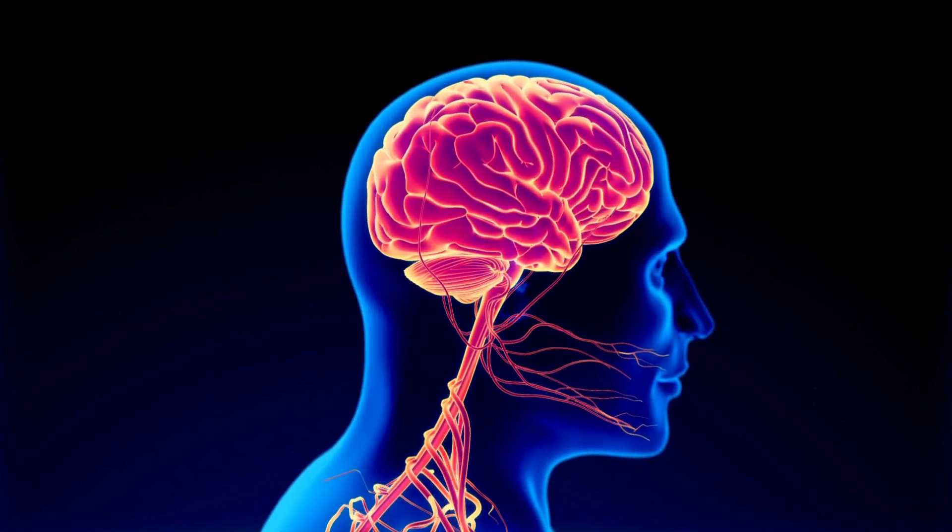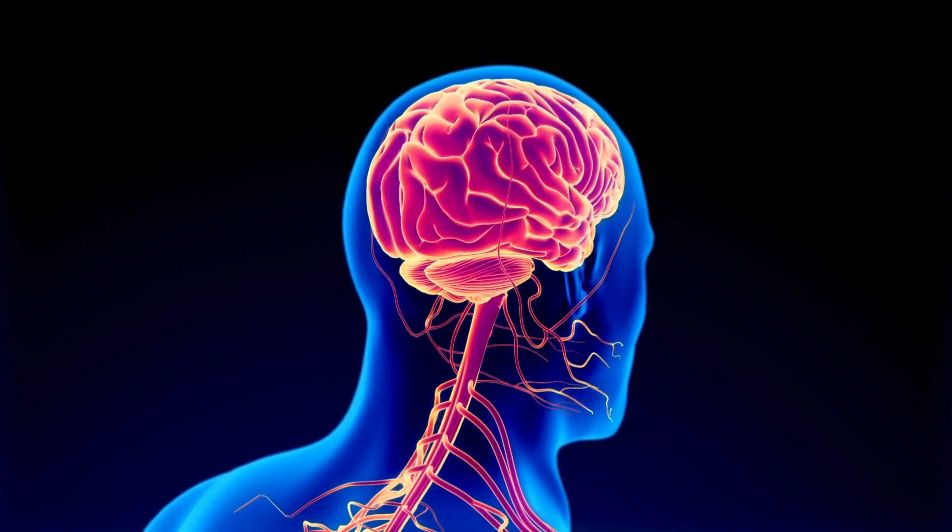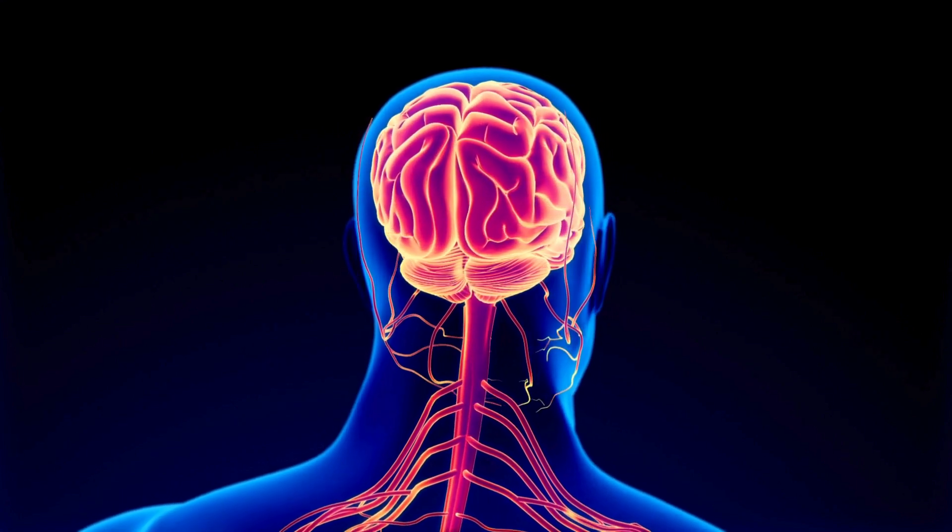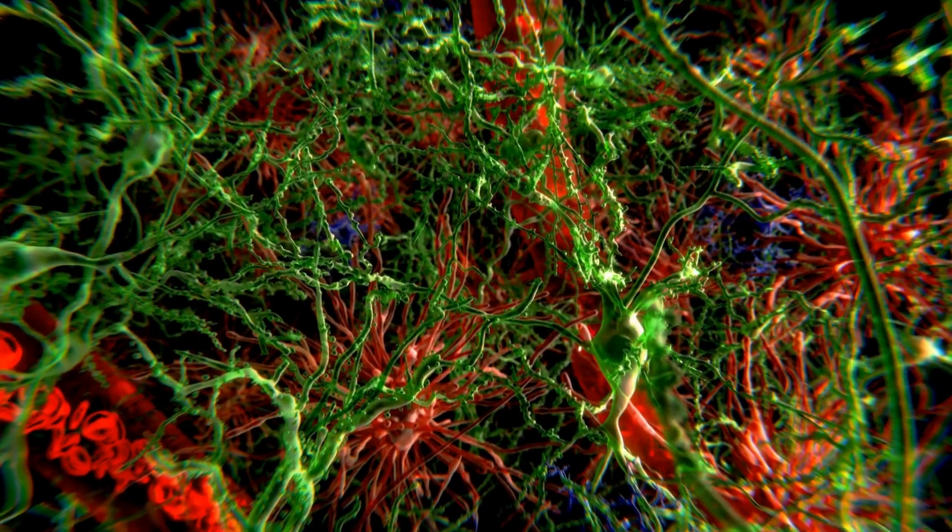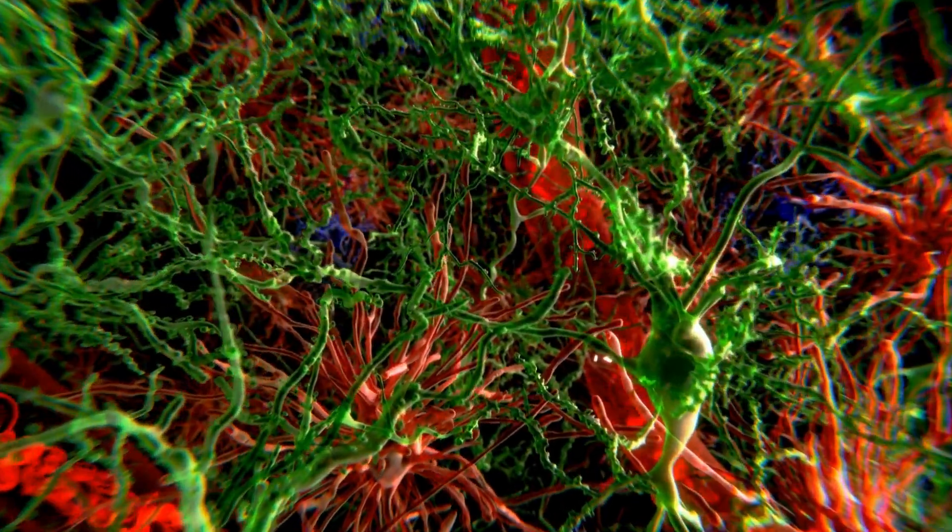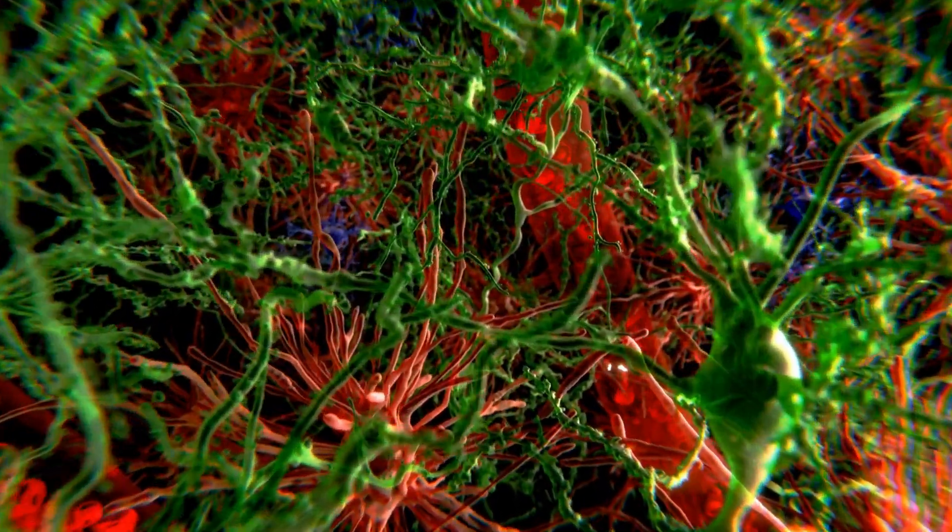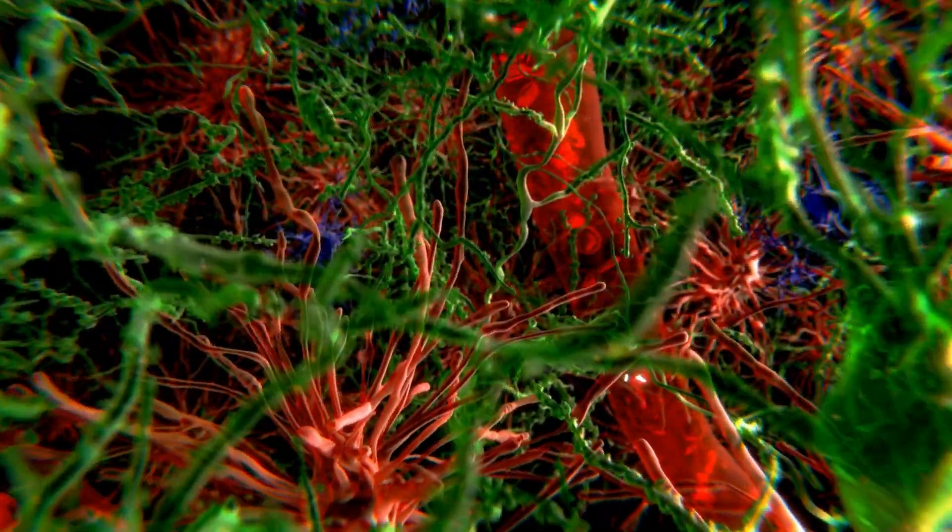In addition to forming myelin, oligodendrocytes are also involved in regulating the environment around neurons. They help provide essential nutrients and remove metabolic waste, ensuring that neurons receive the necessary support to function properly.